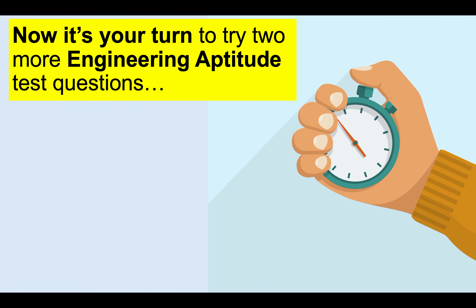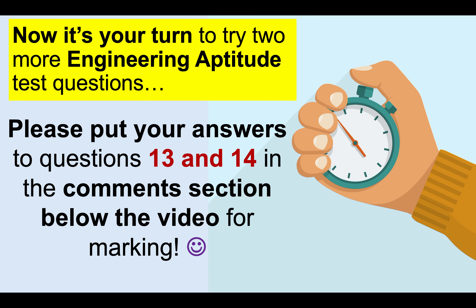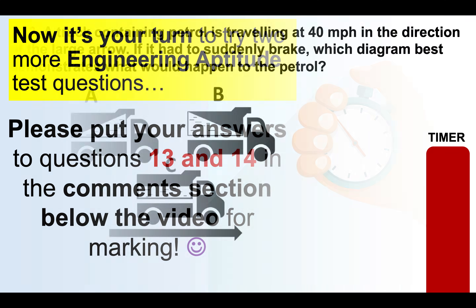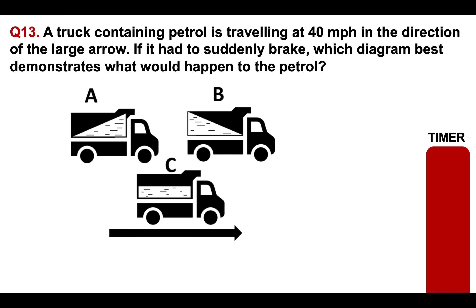Now it's your turn to try two more engineering aptitude test questions. Please put your answers to questions 13 and 14 in the comments section below the video. Question 13: a truck containing petrol is traveling at 40 miles per hour in the direction of the large arrow going to the right. If it had to suddenly brake, which diagram best demonstrates what would happen to the petrol — A, B, or C?